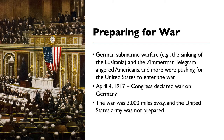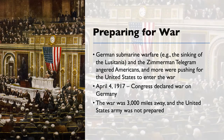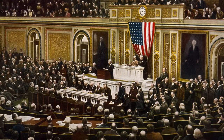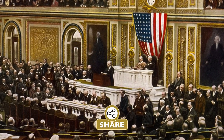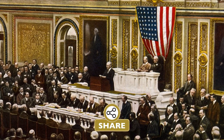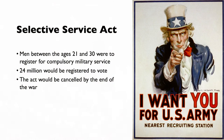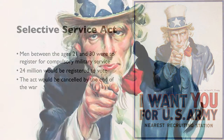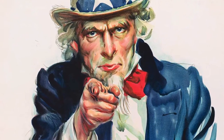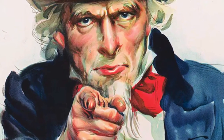In 1916 and 1917, President Woodrow Wilson worried a German victory would create a dangerous power shift in Europe. German submarine warfare and the Zimmermann Telegram angered Americans, and more were pushing for the U.S. to enter the war. On April 4, 1917, Congress declared war on Germany. The war was 3,000 miles away and the United States Army was not prepared — it would take time to train and equip the army. They passed the Selective Service Act, requiring men between the ages of 21 and 30 to register for compulsory military service.